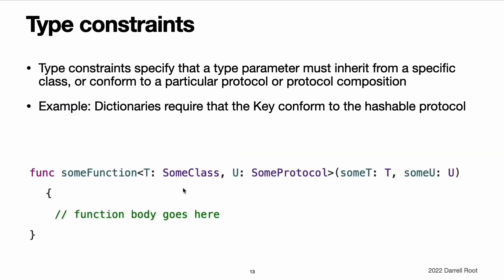Type constraint syntax. You write type constraints by placing a single class or protocol constraint after a type parameter's name, separated by a colon, as part of the type parameter list. The basic syntax for type constraints on a generic function is shown here, although the syntax is the same for generic types. The hypothetical function here has two type parameters. The first type parameter, T, has a constraint that requires T to be a subclass of some class. The second type parameter, U, has a type constraint that requires U to conform to the protocol some protocol.